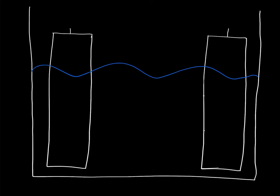Protons have a property called charge, and they have a positive charge. Electrons have a property called negative charge. In this video I'm going to represent electrons — sometimes it's just E⁻. If I'm drawing, let's say, carbon, and I put little dots around it, those are also going to be electrons. And if I draw a line, that just means a bond — two electrons.